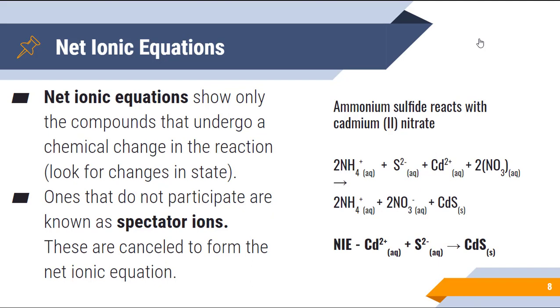If I look here, 2NH4+ and 2NH4+ are both on the left and right side of the equation so they cancel. Same as 2NO3-, we have that on the left and the right so it cancels. So our net ionic equation takes aqueous sulfur ions, aqueous cadmium ions, to form a solid cadmium sulfide. It's pretty straightforward, but let's practice with the practice problem.